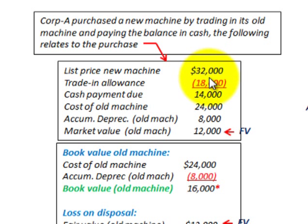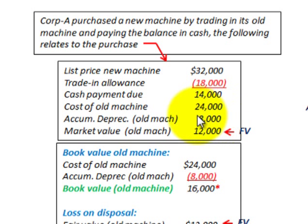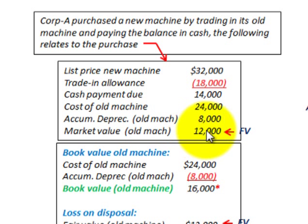Next we have our cost of our old machine — that's what the old machine originally cost. Then we have our accumulated depreciation on the old machine, just prior to our exchange. And then the market value of the old machine — this is what we have to establish, the fair value of what this machine would be worth if it was actually sold on the open market. You can see there's a difference between the market value of $12,000 and the trade-in allowance.